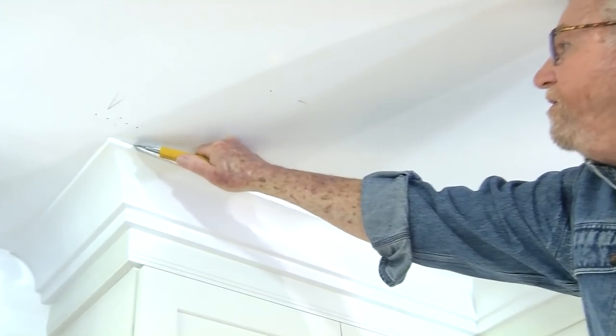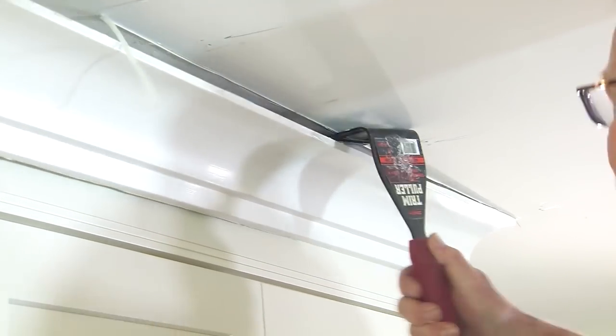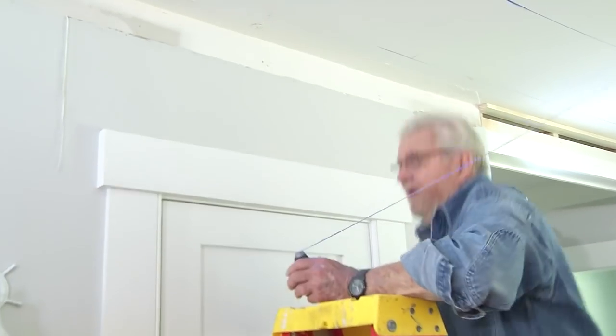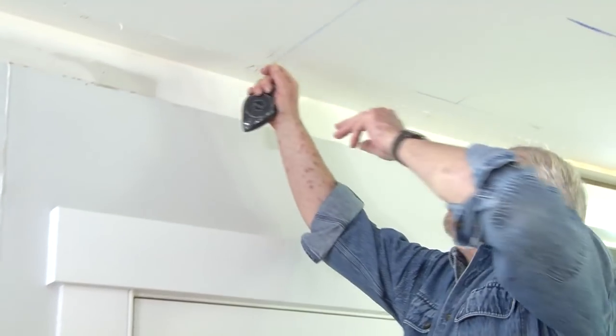The first step is to cut the caulking on the edges and joints of the existing crown molding so that it can be removed. The molding will be reinstalled later. With the molding off, we use a stud sensor to find the ceiling joists and strike chalk lines to mark their location.